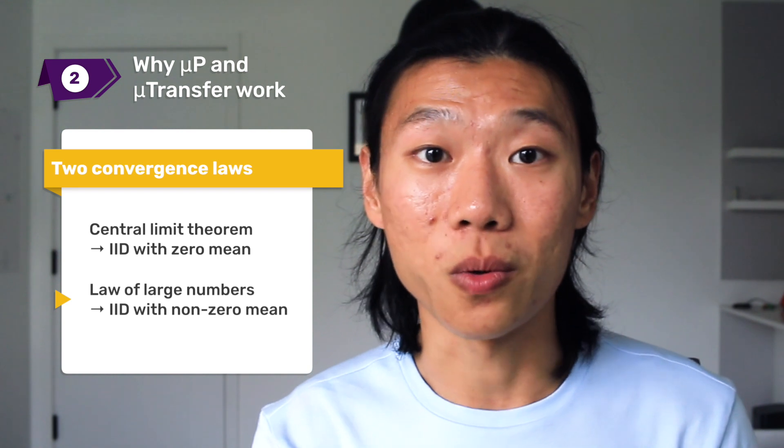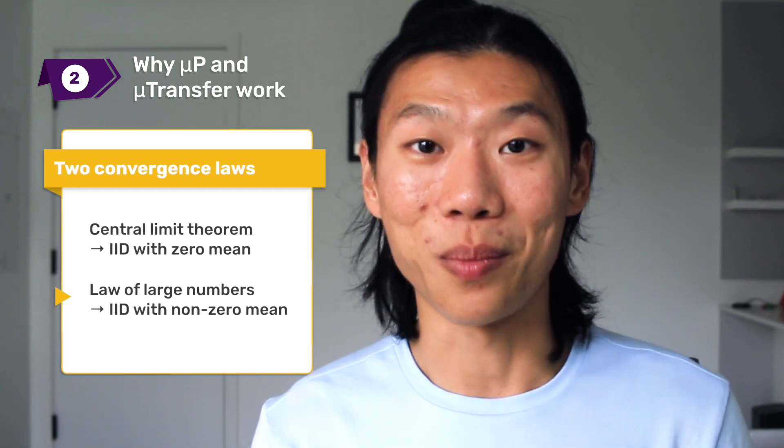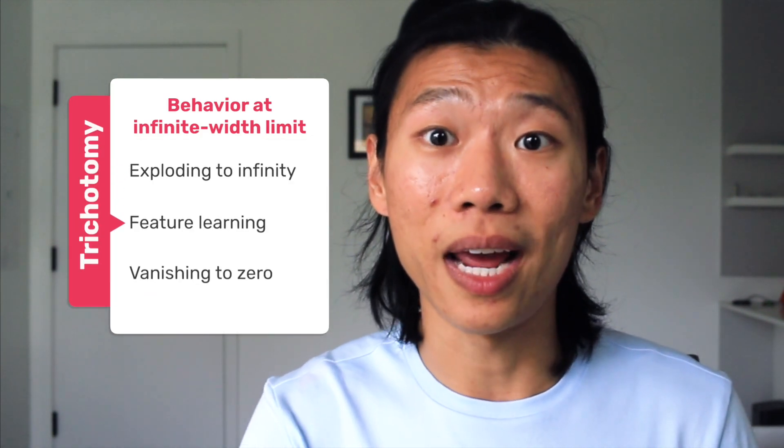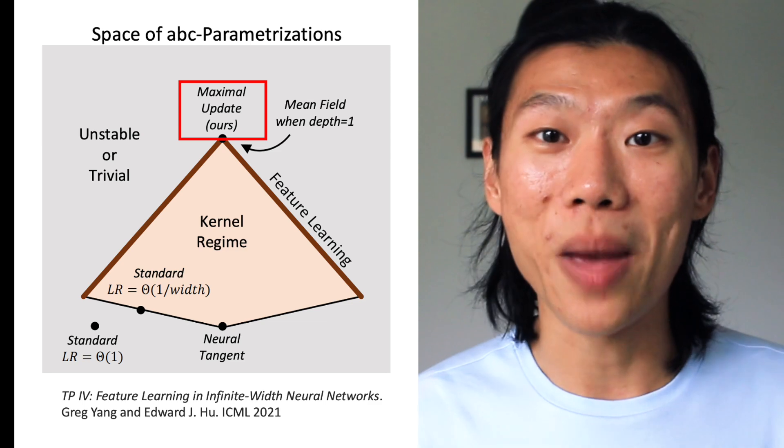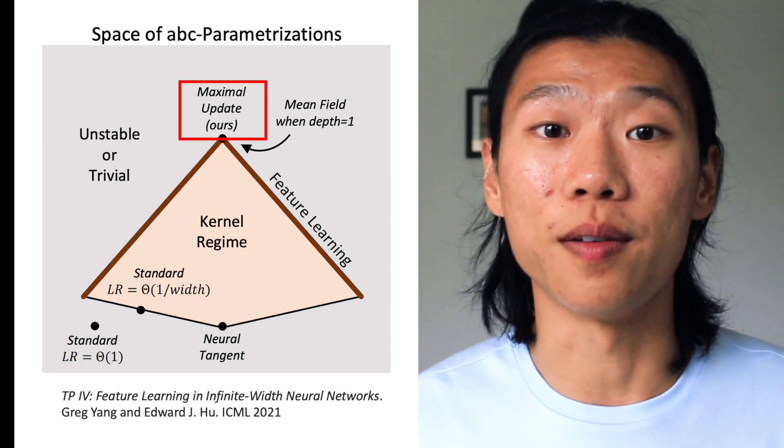If the pieces being summed are IID but have non-zero mean, the result behaves according to the law of large numbers. This also occurs in the neural network because gradient updates are highly correlated with the input data, and this correlation gives a non-zero mean. According to the central limit theorem, we need to normalize by the square root of width to stabilize the sum, but according to the law of large numbers, we need to normalize by width instead. MuP carefully manages these two behaviors so none of the layer activations explode or vanish. A finite width neural network always learns some features in every layer, but the infinite width limit is much less forgiving. There's a trichotomy of exploding to infinity, feature learning, and vanishing to zero, because any incorrect scaling is instantly amplified to the extreme by the infinite sum over width.